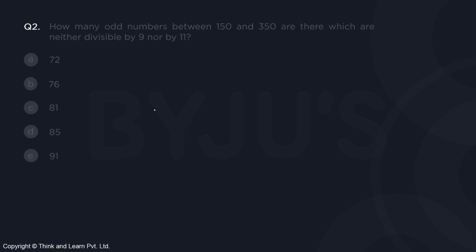Let's calculate that. First of all, how many odd numbers are there in this range? The first odd number is 151, the next odd number is 153, and so on. The last odd number is 349.